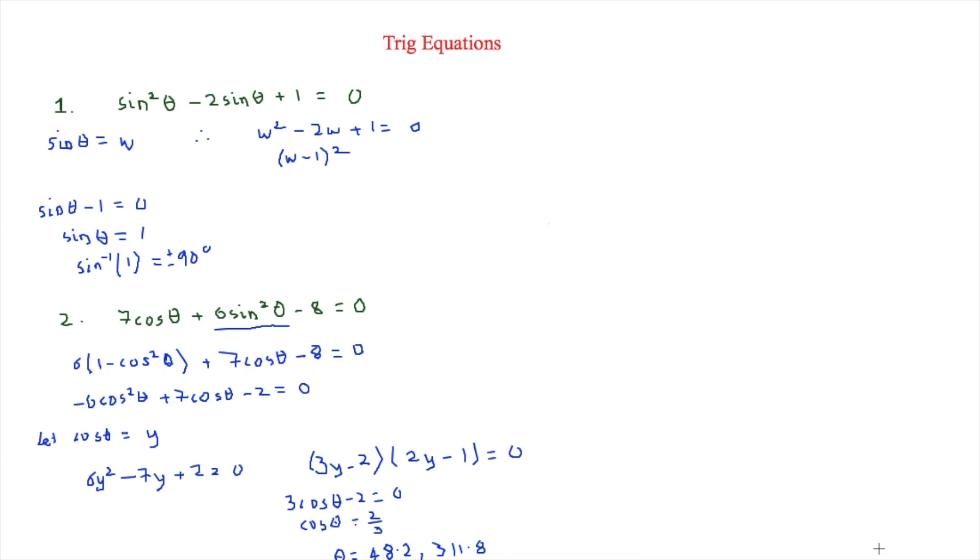And then we'll do 360 minus 48.2. So you get 311.8. Now, it's the same thing to do for the 2y minus 1. So therefore, we get 2 cos theta minus 1 is equal to 0.